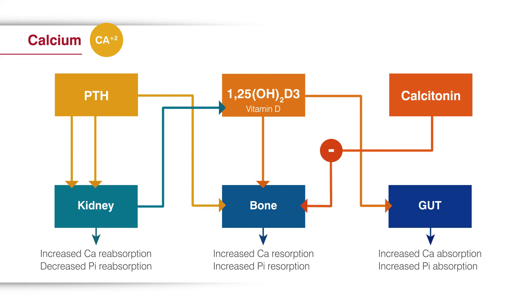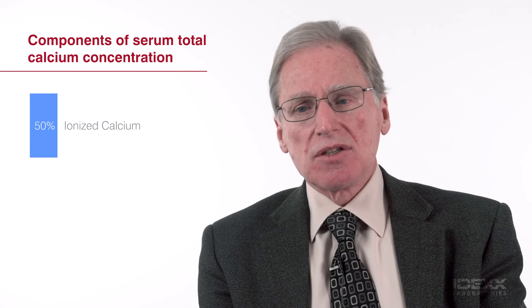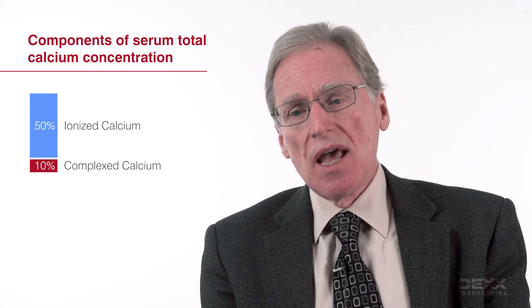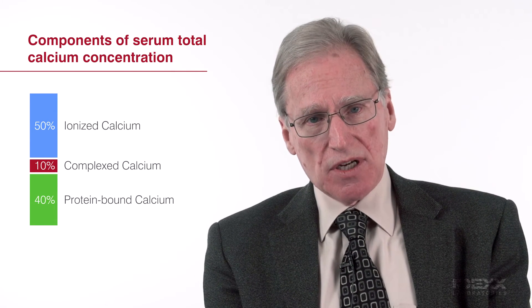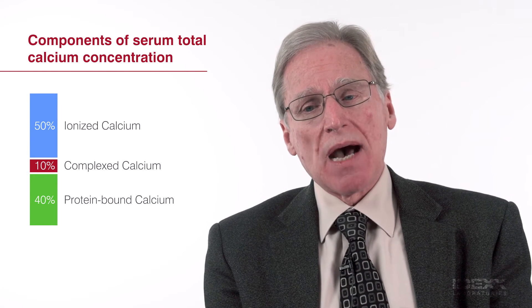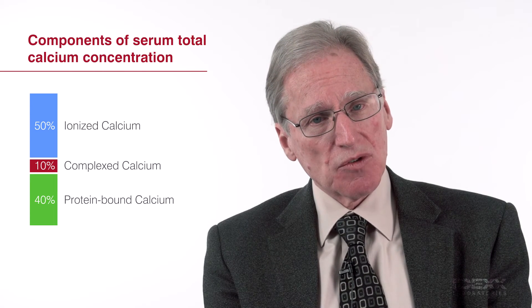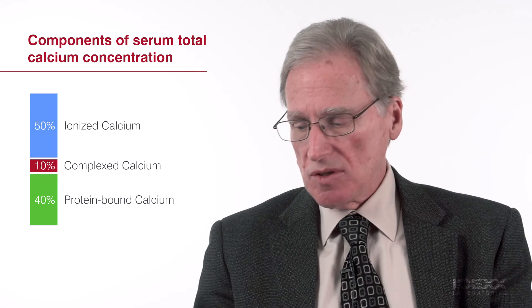Another factor that makes understanding calcium a little difficult is that when you measure calcium on your biochemical profile, you get the total serum calcium concentration, but hidden within that total are three components: the ionized concentration, the complex concentration, and the protein-bound concentration. This is important because 40% of that calcium is bound to plasma protein — albumin. So changes in the blood albumin concentration can affect your total calcium concentration.